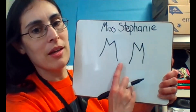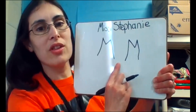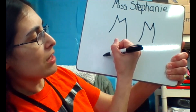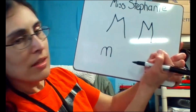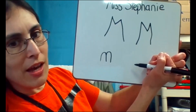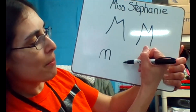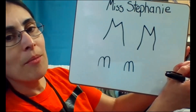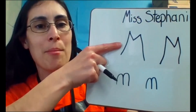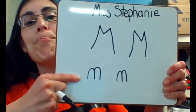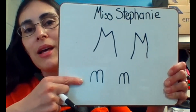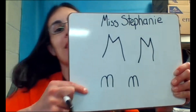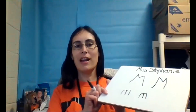Capital M. All right, let's try the lowercase M. I'm gonna start at the bottom and make two lumps. Lowercase M — start at the bottom and make two lumps. Letter M.